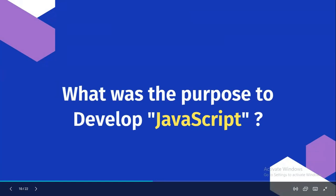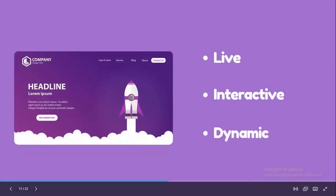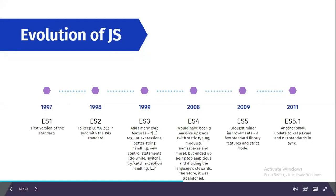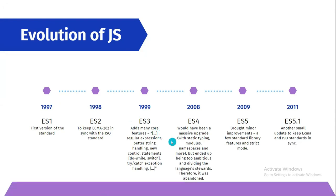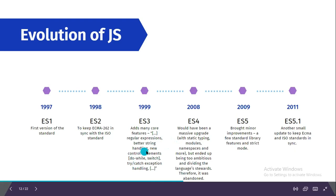The main purpose to develop JavaScript was to make websites live, interactive, or dynamic. The evolution of JavaScript: the first standardized version was ES1 (ECMAScript 1) in 1997. Then ECMAScript 2, also known as ECMA-262, was released in 1998. ES3 was released in 1999 - they added array, regular expressions, strings, and basic control statements.